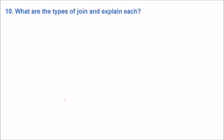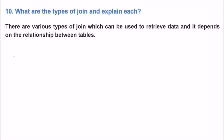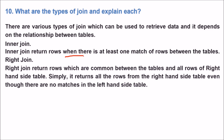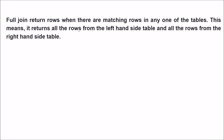What are the types of joins? There are various types. Inner join returns rows where there is at least one match between the tables. Right join returns rows common between the tables plus all rows from the right-hand side table, even if there are no matches in the left-hand table. Left join returns rows common between the tables plus all rows from the left-hand side table, even if there are no matches in the right-hand table. Full join returns rows when there are matching rows in any one of the tables — it returns all rows from both the left and right tables.